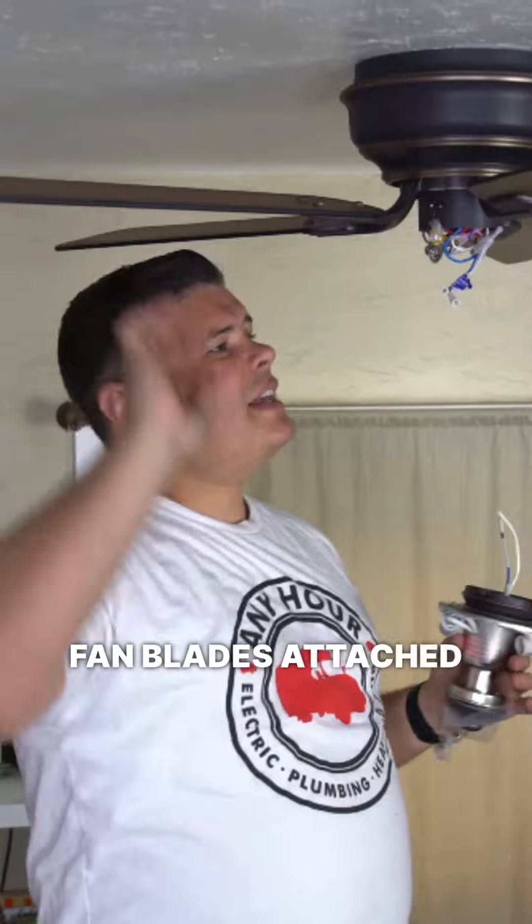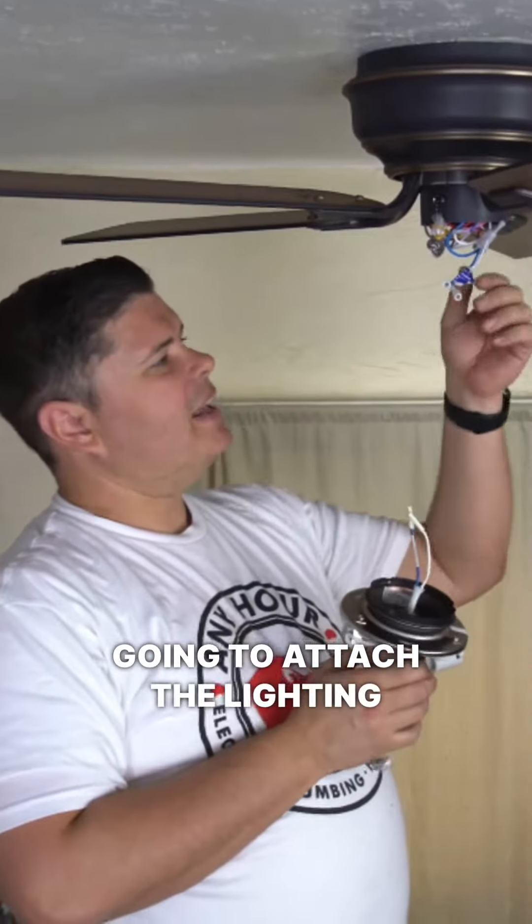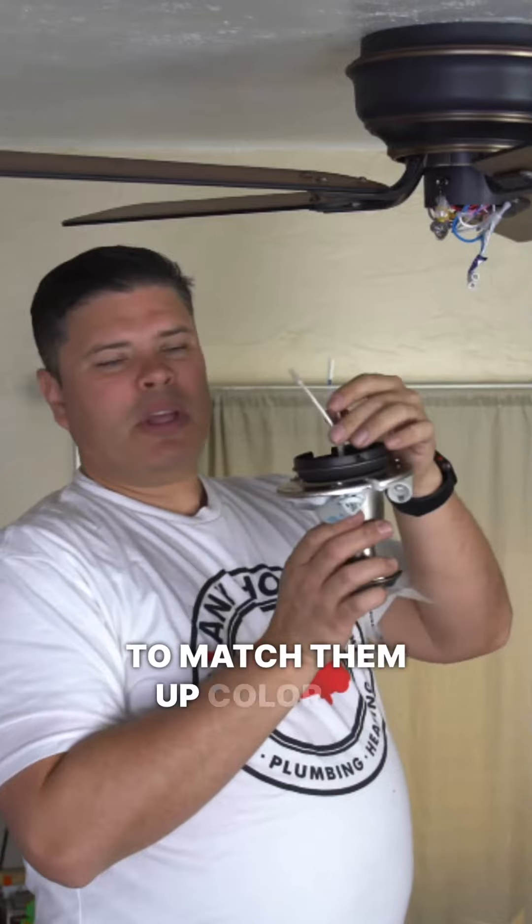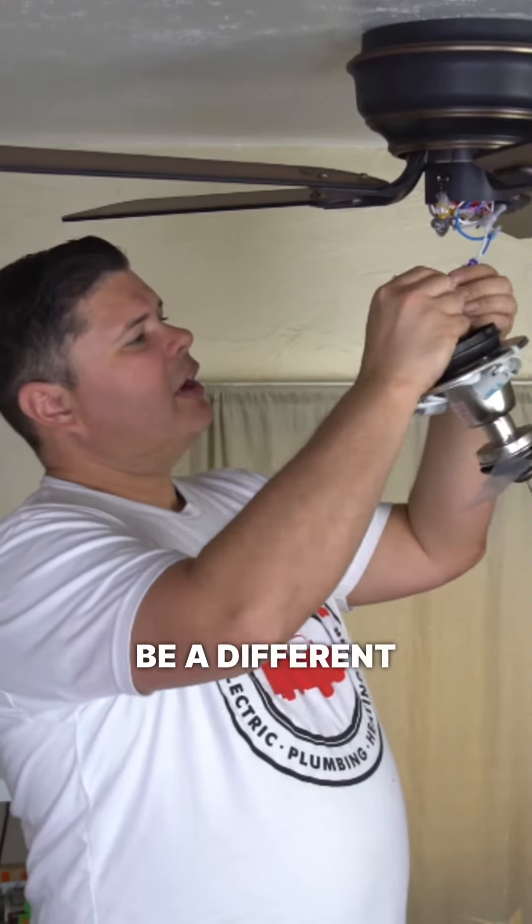So now that we have the fan blades attached, we're actually going to attach the lighting kit. There are some wires coming off here. They're labeled. You're going to match them up color to color. Mine's blue and white. Yours might be a different color.